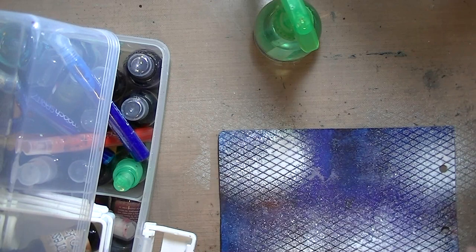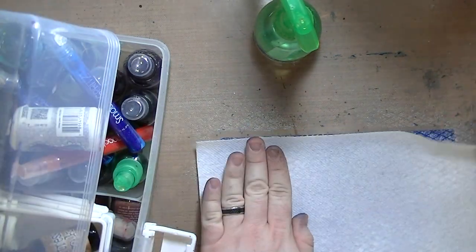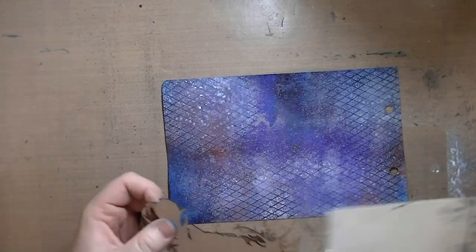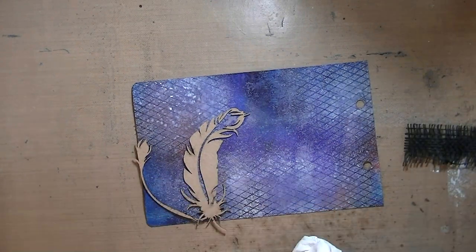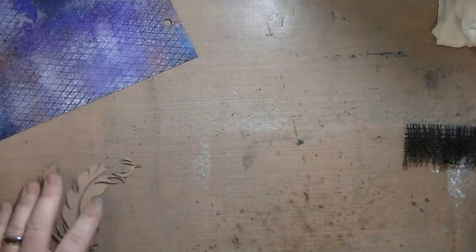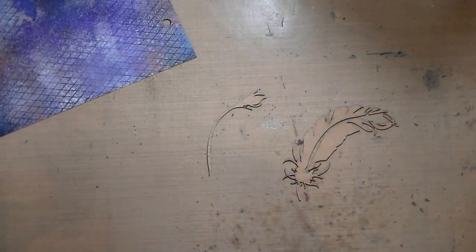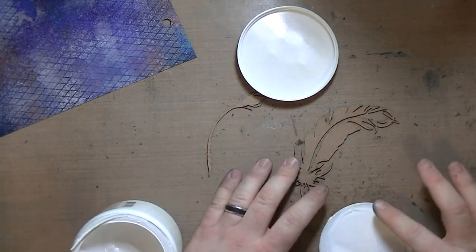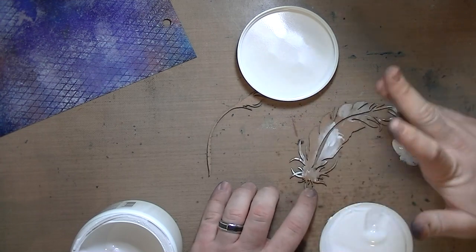This is a grill thing from the Dollar Tree. It was wavy and I ran it through my Big Shot with all of the plates but no dies and it flattened it out, so yay. I used my Dilutions white linen through that stencil just to soften it up a bit.